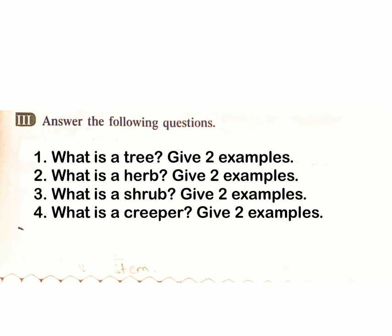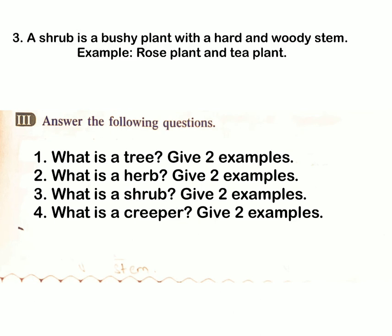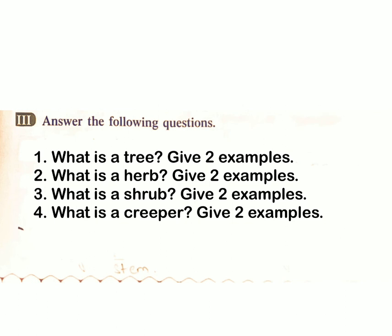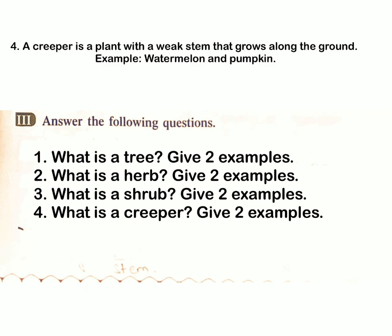3. What is a shrub? Give two examples. Answer: A shrub is a bushy plant with a hard and woody stem. Examples: rose plant and tea plant. 4. What is a creeper? Give two examples. Answer: A creeper is a plant with a weak stem that grows along the ground. Examples: watermelon and pumpkin.